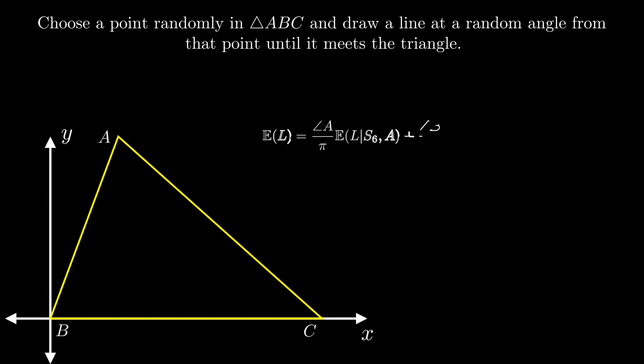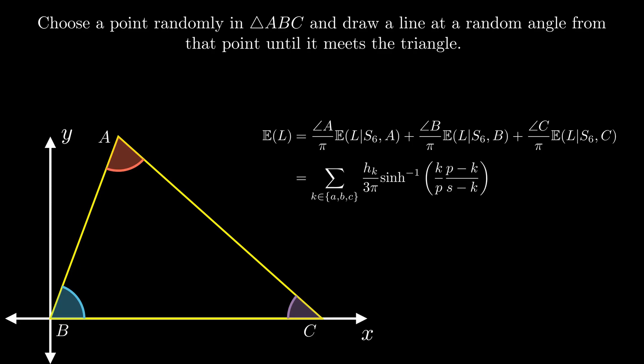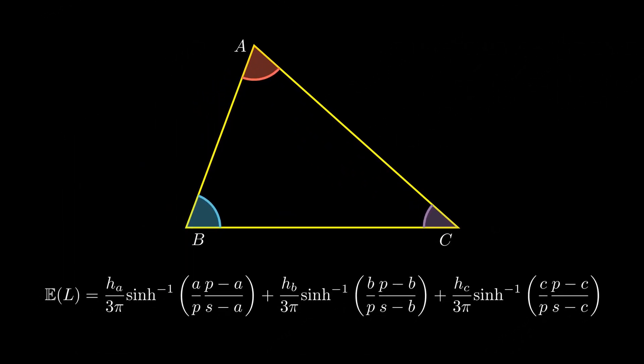Based on our results so far, we can simplify this case by dividing the range into the three angles of the given triangle. Each of these sub-cases is the same as that of setup 6 on the three vertices of the triangle. Thus, we finally get the expected length with a very symmetric and closed-form solution. And that is the result I wanted to share with you in this video.